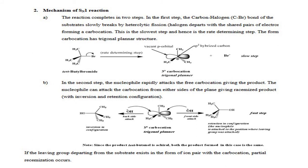The mechanism of SN1 reaction is completed in two steps. In the first step, there is formation of a carbocation and breaking of the carbon-halogen bond. In this case, the bromide ion is the leaving group. Firstly, there is a heterolytic bond cleavage. Since bromine is highly electronegative compared to carbon, it carries a negative charge and carbon carries a positive charge. So it forms a carbocation and bromide ion is released. This is the slowest step, and as we know, the slowest step is the rate-determining step. In this step, a tertiary carbocation with sp² hybridized carbon is formed because it contains three methyl groups.